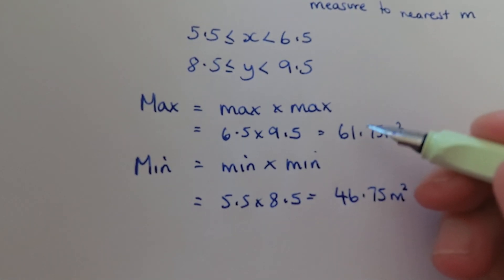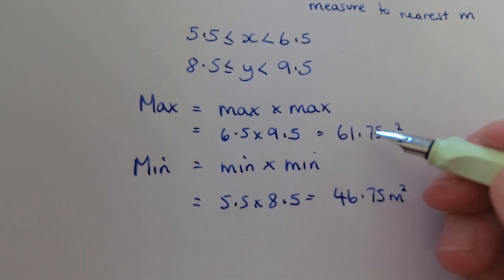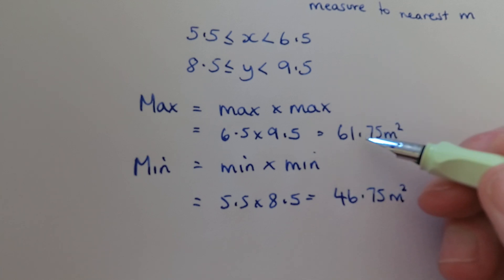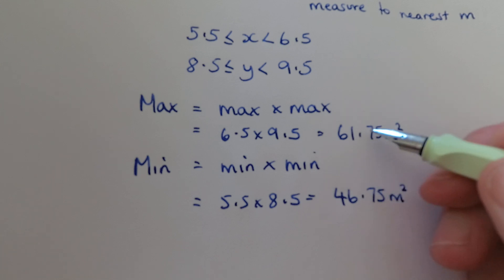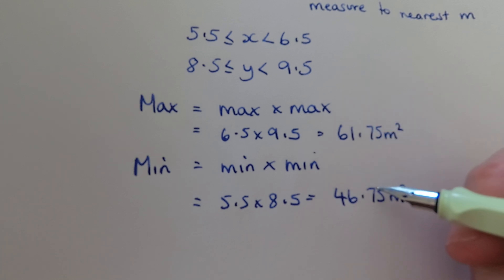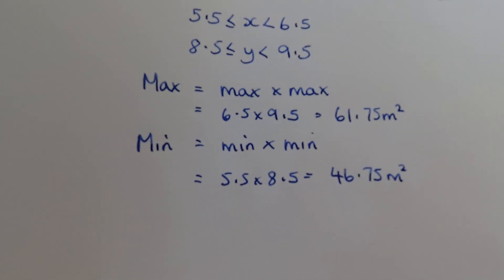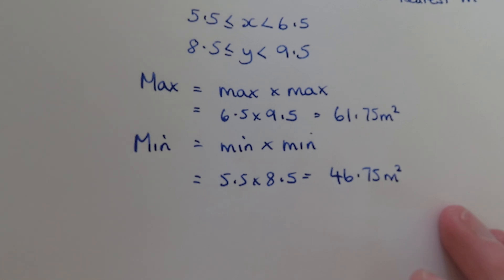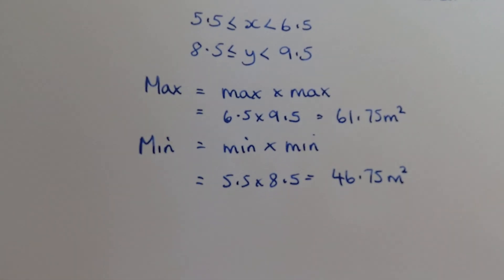As you can see, there's a massive difference in square meters between the minimum the room could be and the maximum it could be. So you can see how it would be quite easy to go wrong in real life, order the wrong amount of carpet, and be very sad.